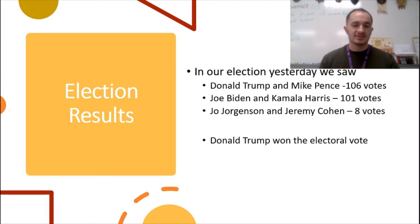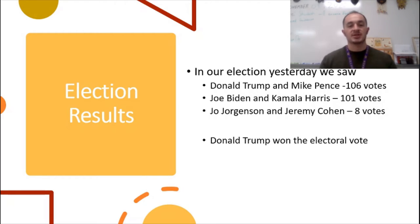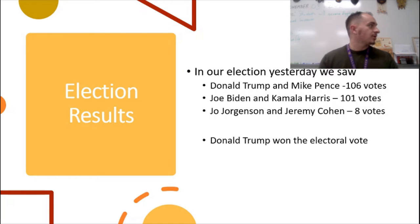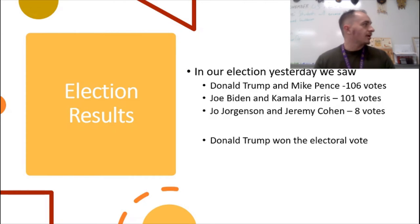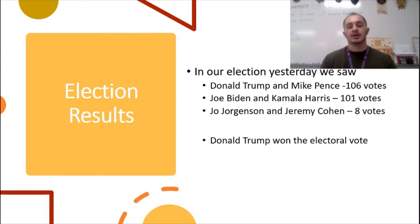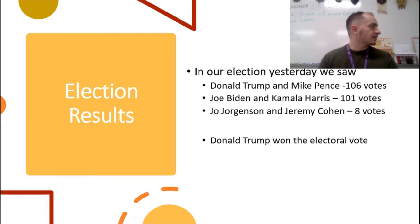So when it came to electoral votes, rather than having to get 270 like they would in a national election, ours was only 47, so they needed to get 24 votes to win the Electoral College vote in New Haven Junior High. We see Donald Trump winning again with 25.5, just barely getting the Electoral College vote, while Joe Biden had 21.5. There was one class that was tied, and so that class got split, and so we saw that the numbers were kind of off.